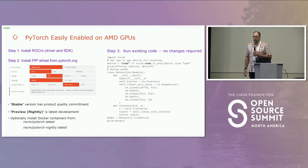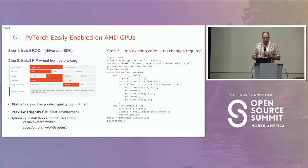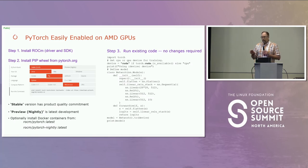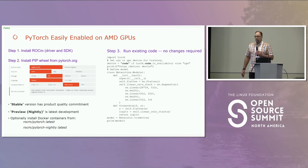To run code today it's very straightforward: you can either get a container or install the ROCm driver, then install the pip wheel from pytorch.org. You go through the selection box, copy and paste the command, and you're up and running on our hardware. If you've already written an application using PyTorch, you don't actually have to change any of the code — you leave `device = 'cuda'` and `if torch.cuda` as-is. It works and uses the AMD hardware.